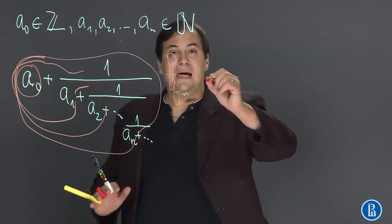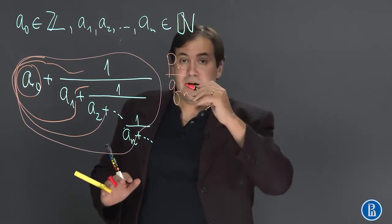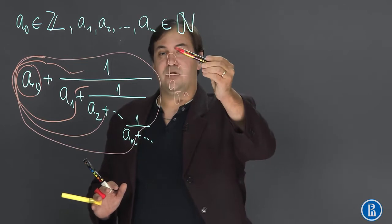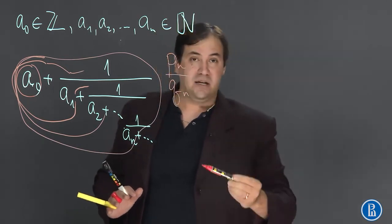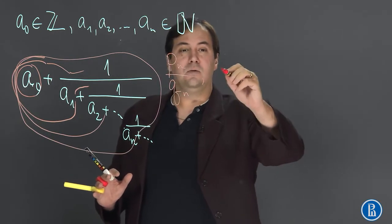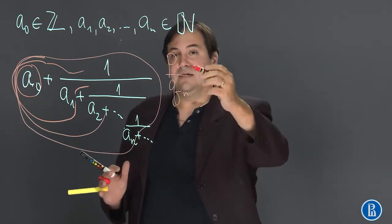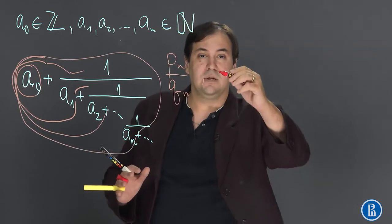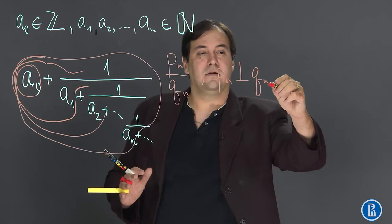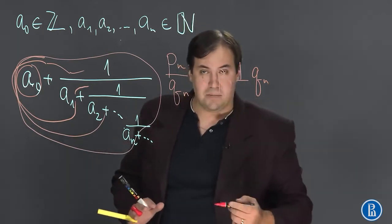So P_n and Q_n are integers. Of course when we say that we denote the numerator by P and the denominator by Q we assume that P and Q are mutually prime so that this fraction is irreducible.